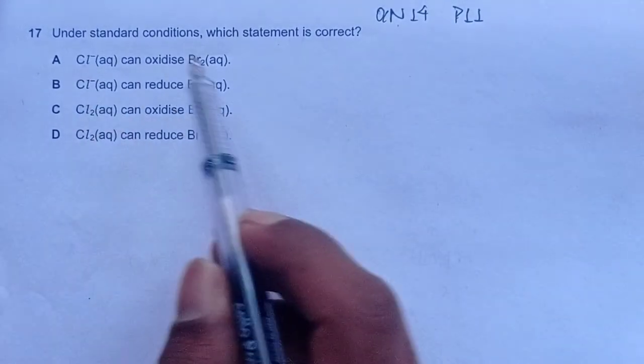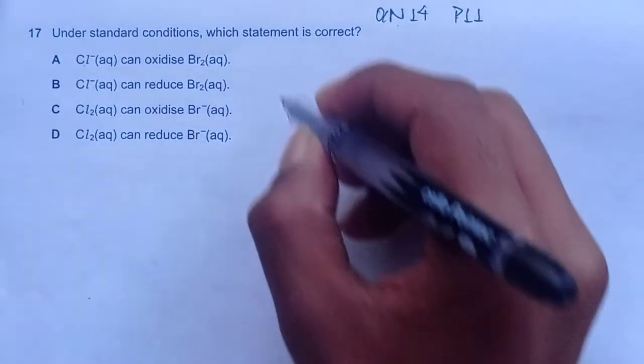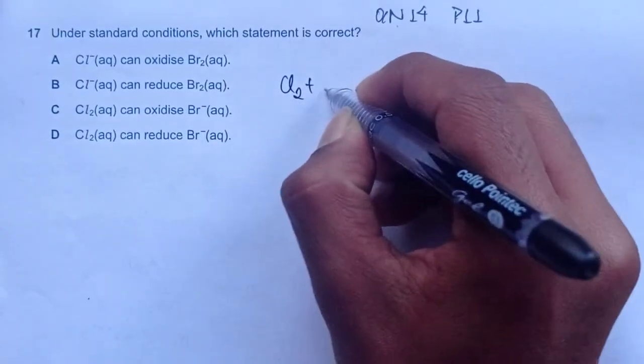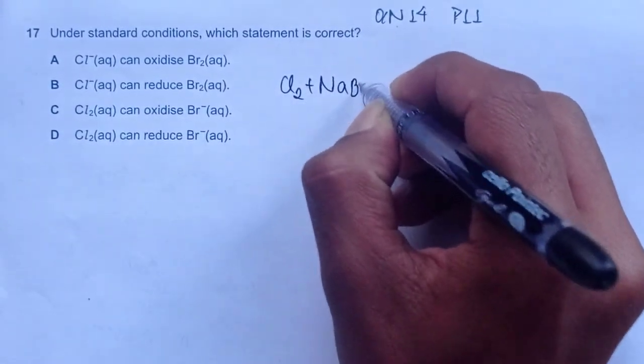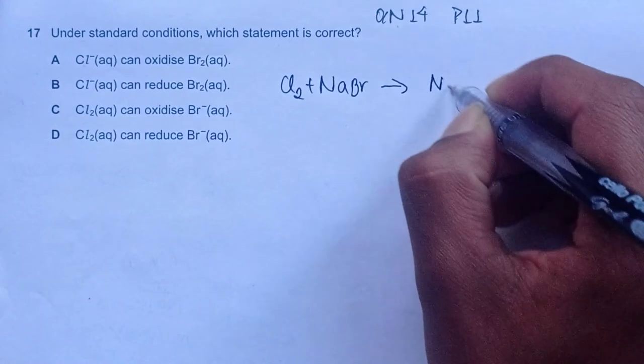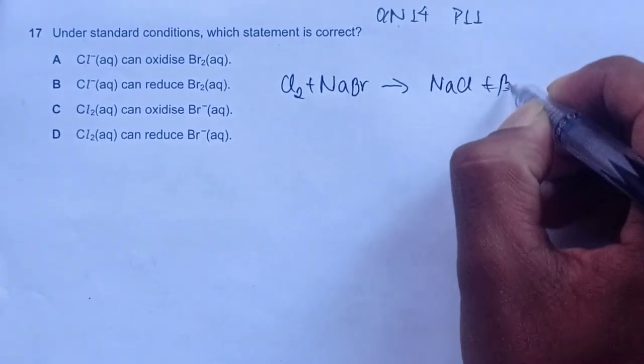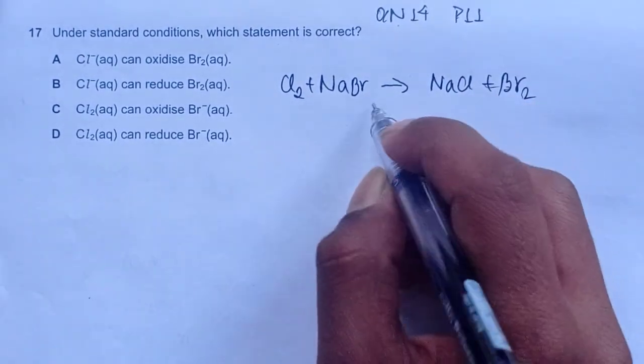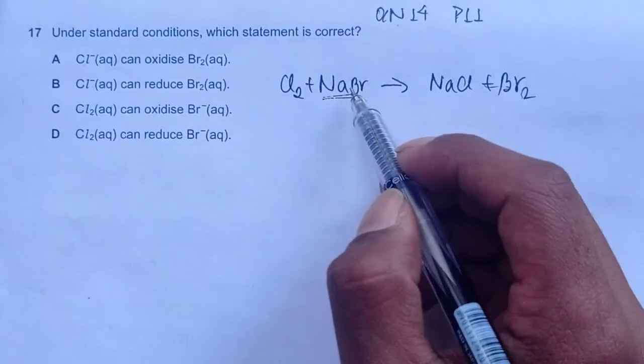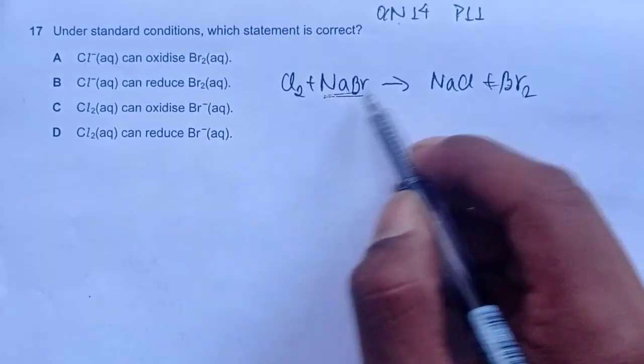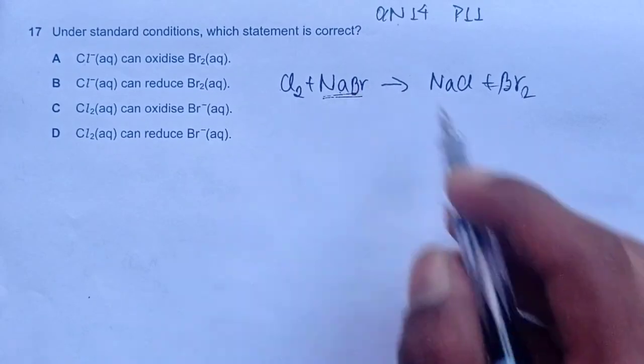Using chlorine and bromine as an example, we could have Cl2 plus NaBr, this should give us NaCl and Br2 which means bromine has been displaced by chlorine in this reaction.